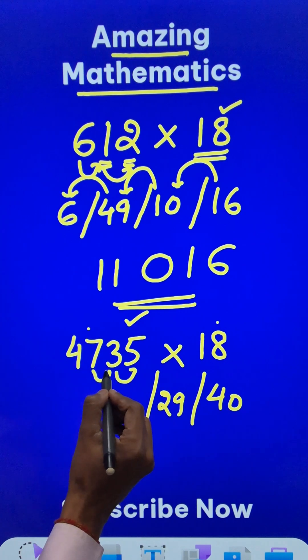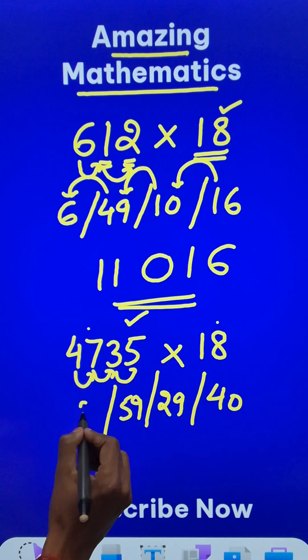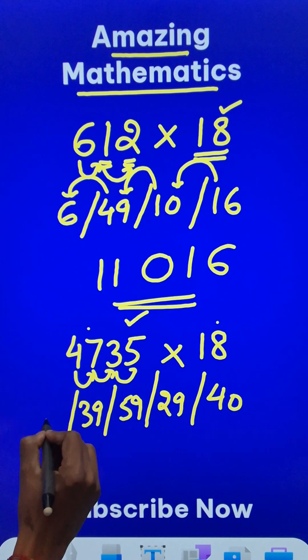7, 8s are 56 plus 3, 59. Then 4, 8s are 32. 32 plus 7, 39, and finally we have the first digit, 4.